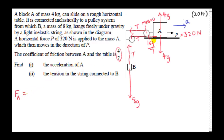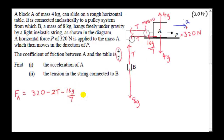We want the acceleration of A, so let's get the resultant force. Taking rightward as positive, the 320 newton force is positive. We have 2T acting to the left, so that's minus 2T, and the friction force is also negative. By Newton's second law that equals mass 4 times acceleration A. The vertical forces add up to zero.